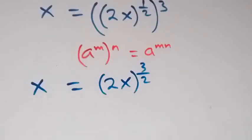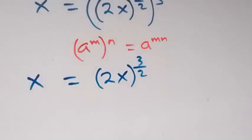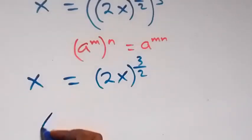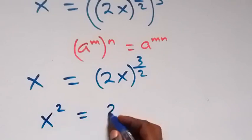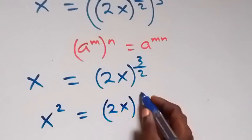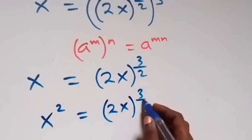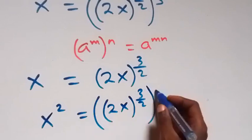Next step: let's square both sides of this equation. This becomes x squared equals to 2x raised to power 3 over 2, and then all squared.